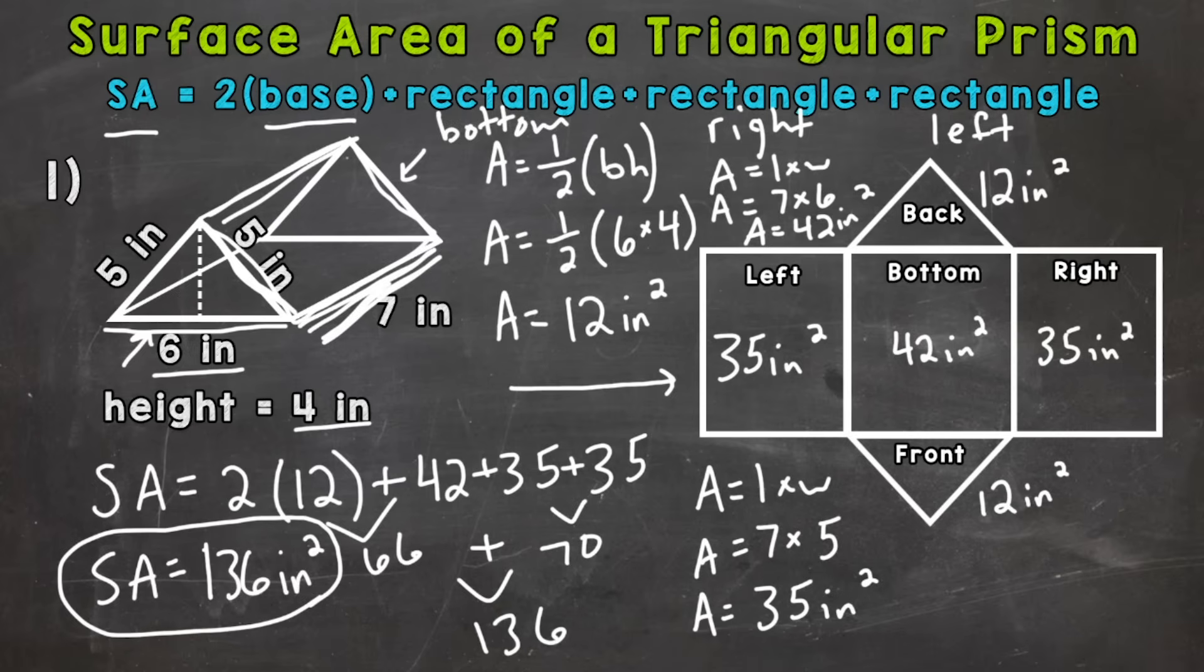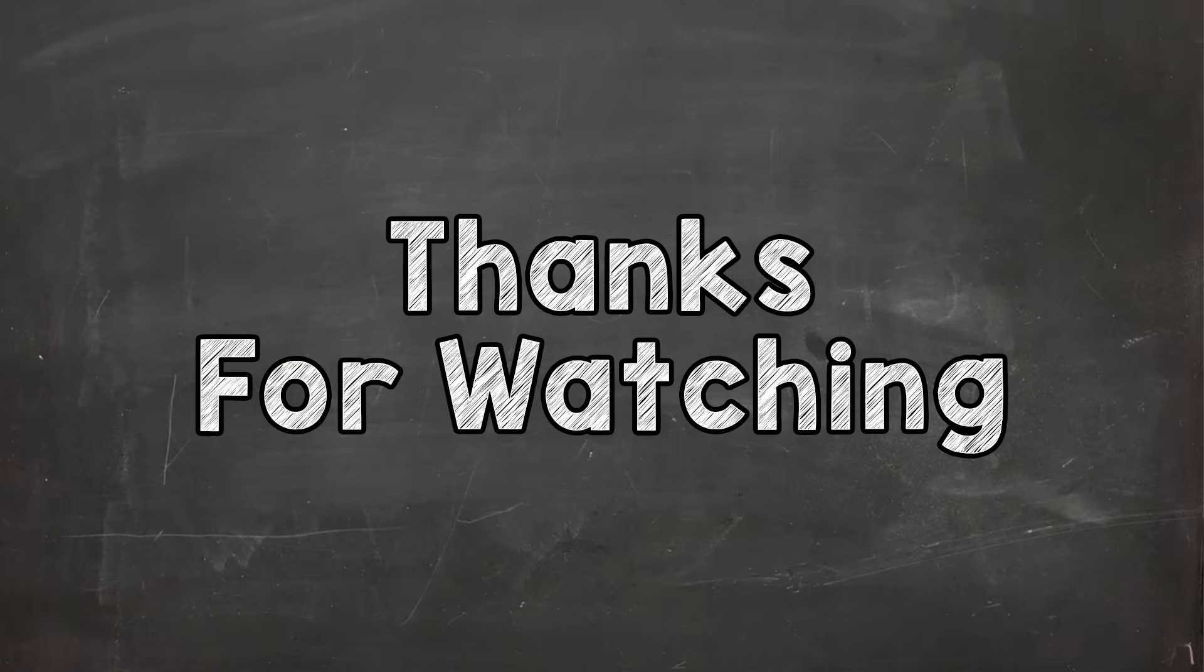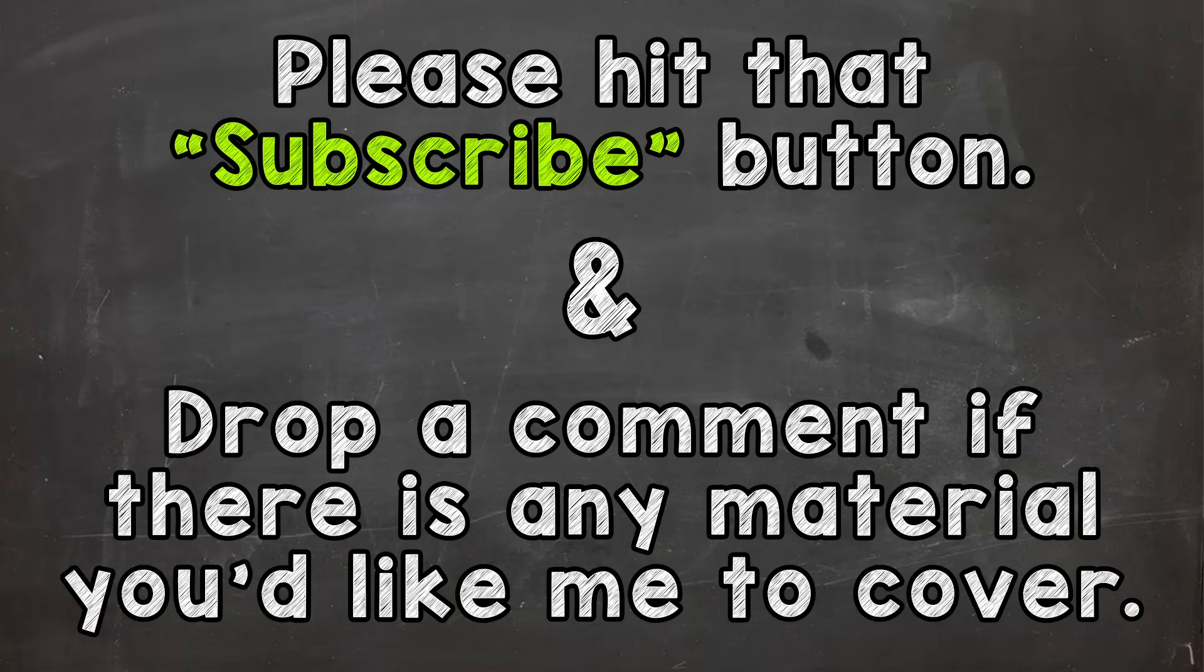Now that was a lot of work there as we went through. Now the more of these problems you do, the better you'll get and the quicker they'll go. I kind of laid everything out and went slowly to really explain each step. So just to recap, when it comes to finding surface area, find the area of each face, add all of those faces up, and you'll end up with the correct surface area. There's how you find the surface area of a triangular prism. I hope that helped. Thanks so much for watching. Until next time, peace.